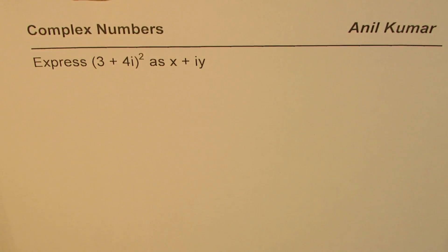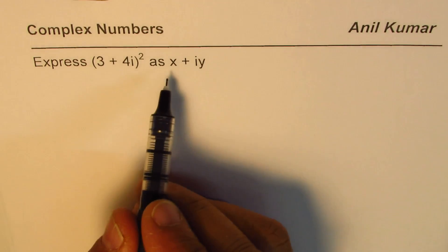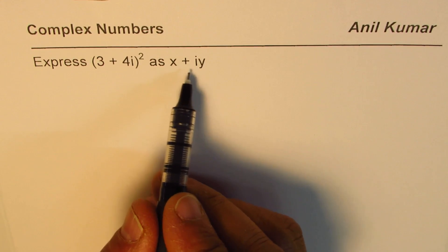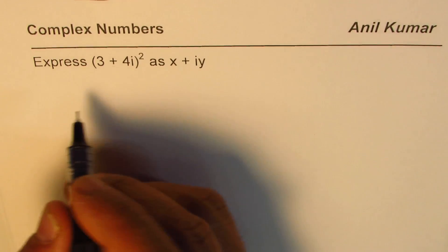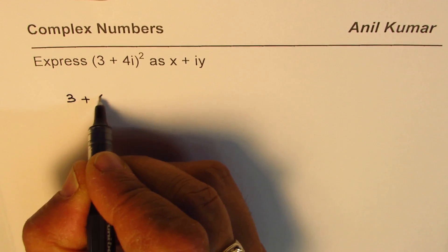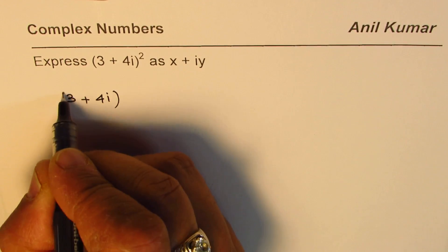I'm Anil Kumar. Let us find the square of a complex number in this video and we'll write it as a complex number x plus iy. So we'll begin with 3 plus 4i whole square.